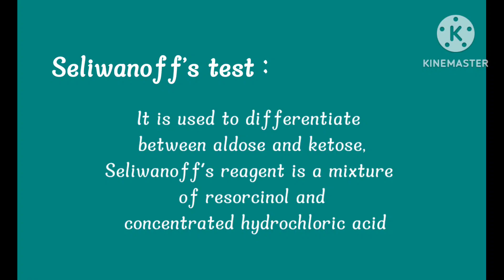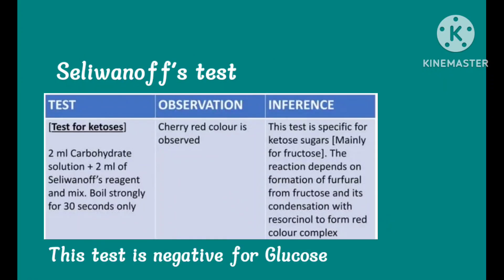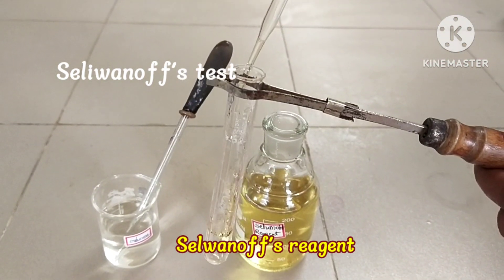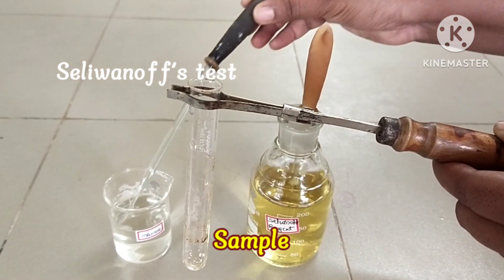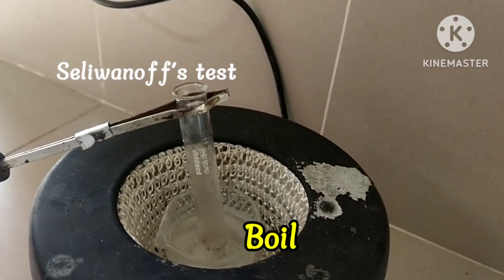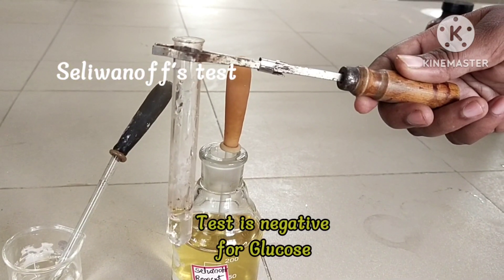Seliwanoff's test: This test is used to differentiate between aldoses and ketoses. This test is positive for fructose and sucrose. Seliwanoff's reagent is a mixture of resorcinol and concentrated hydrochloric acid. The reaction depends on the formation of furfural from fructose and its condensation with resorcinol to form a red color complex. This test is negative for glucose. Procedure: Add 3 ml of Seliwanoff's reagent and 1 ml of sample solution. Boil the solution. No red precipitate is produced — this test is negative for glucose.